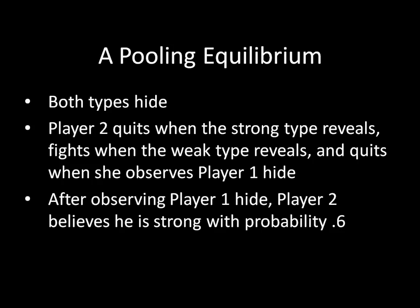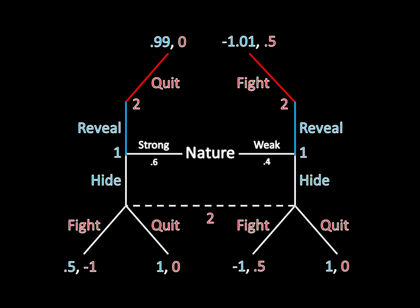There's one set of pure strategies from the two different types of Player 1 that we've yet to cover: what would happen if both types of Player 1 chose to reveal. You might think this is straightforward, given every other set of pure strategies we've looked at, but it turns out that's not the case — it's actually fairly complicated. We're going to address that and talk about off-the-path beliefs in the next lecture. I hope you enjoyed this lecture and hope to see you next time. Take care.